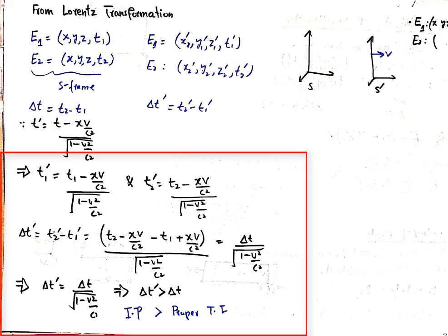The same time dilation expression is obtained using only the transformation equations — no geometrical diagrams needed, making it more abstract and general. Time dilation is a consequence of both Einstein's second postulate and the Lorentz transformation. In the next video I will talk about the relativity of simultaneity.